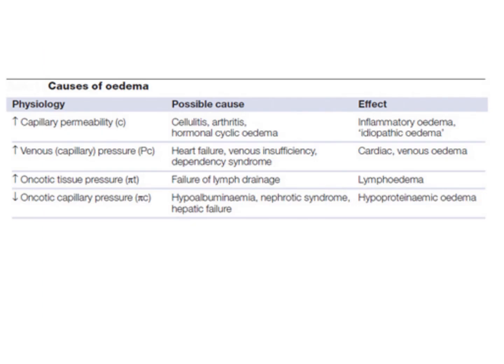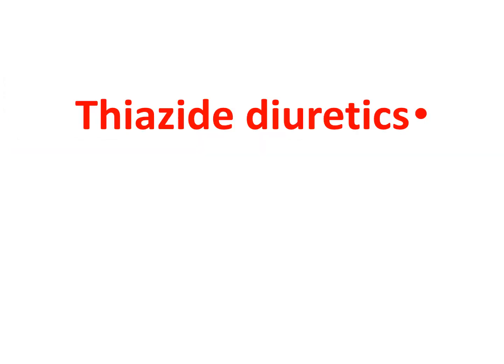This table summarizes the causes of edema, including increased capillary permeability as in arthritis causing inflammatory edema; increased venous capillary pressure as in heart failure; failure of lymph drainage as in lymphedema; and decreased oncotic capillary pressure as in hypoalbuminemia, nephrotic syndrome, and heart failure. The effect in the latter case is hypoproteinemic edema.